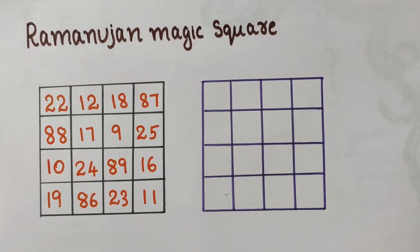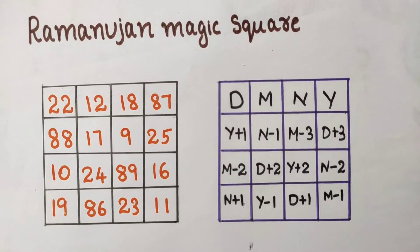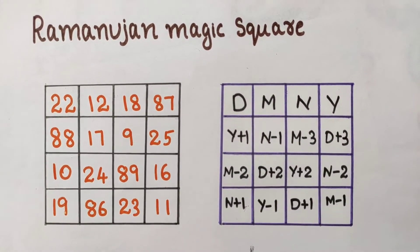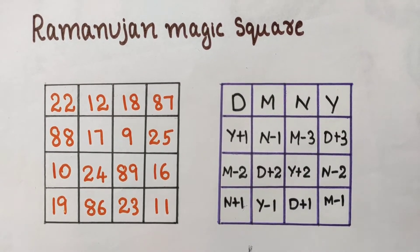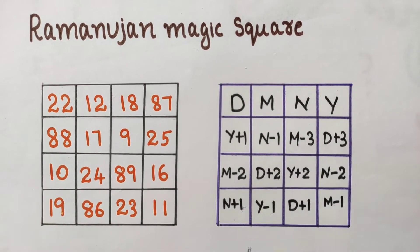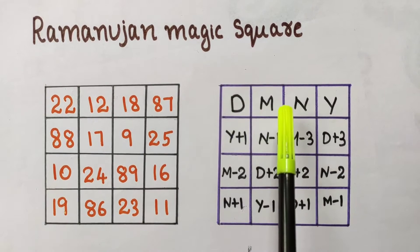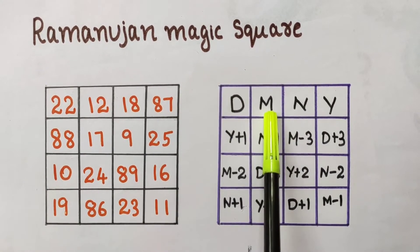You can make your own birthday magic square using this template. In this method you should write your birth date in place of D. Month should be written in place of M.